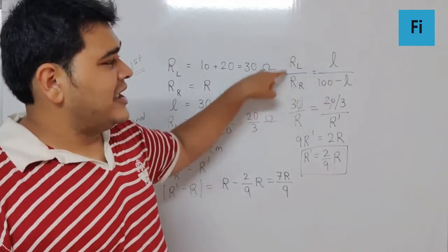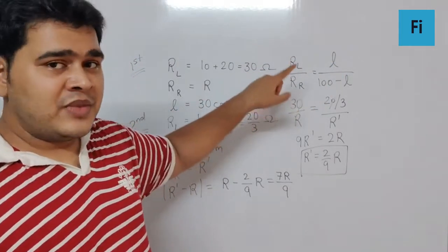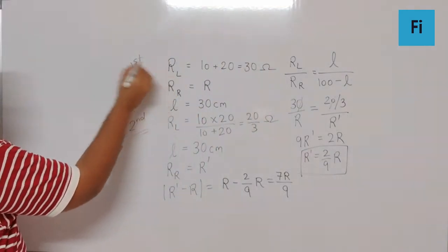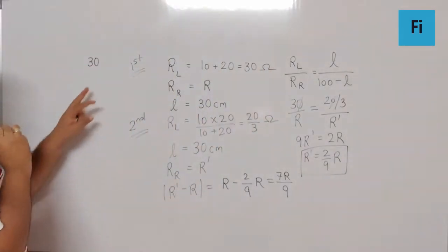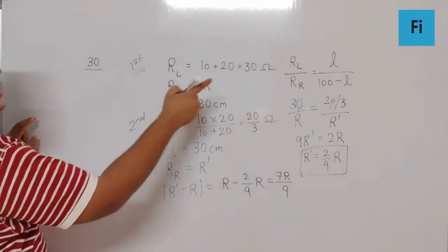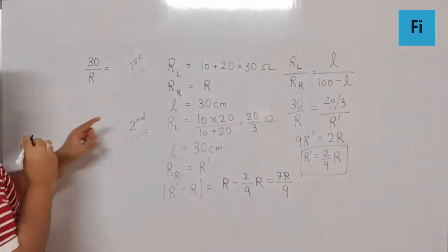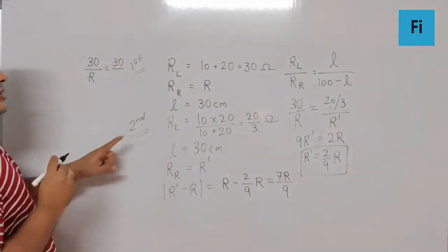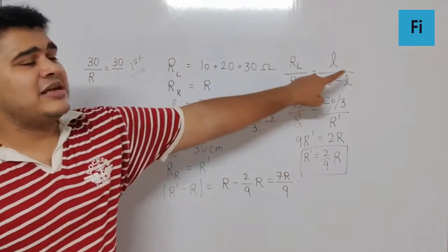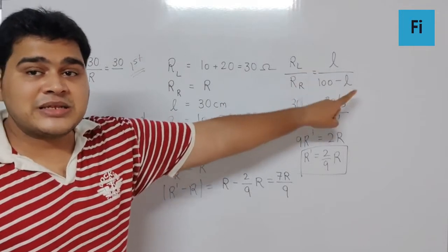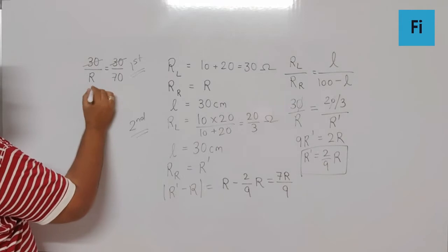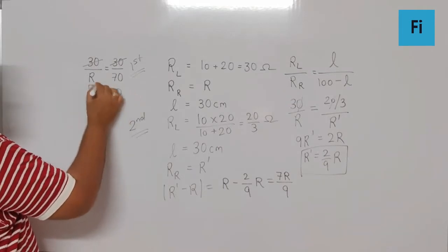We can use this formula again to find R. From the first case, RL is 30 upon R equals L upon 100 minus L, which is 30 upon 70. The 30 cancels, and we get R equals 70.